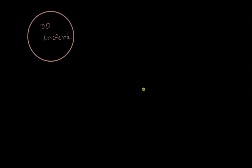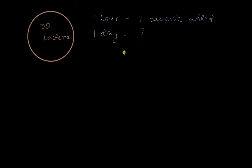Let's try to quantify this. Let's say we have 100 bacteria in a petri plate, and in one hour two bacteria are added. So after one hour, we started out with 100 bacteria and each of them divides to form two bacteria, so we multiply 100 by 2. We can write this as 100 times 2 to the power 1, which equals 200.